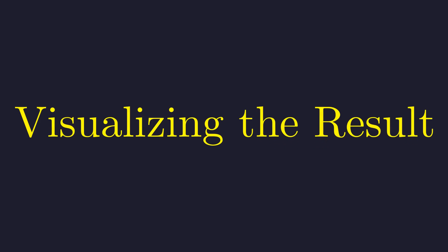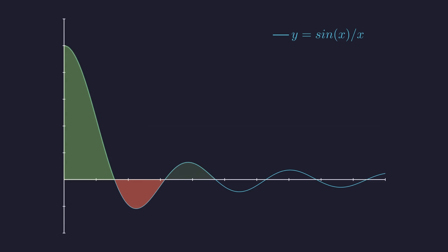Let's take a moment to visualize what this means. The function sine of x over x is also known as the sinc function. Here is a graph of the function. Notice how it starts at 1 and then oscillates with decreasing amplitude. The integral represents the net area under this curve. The positive lobes, shown in green, add to the area, while the negative lobes, shown in red, subtract from it. Even though the function goes on forever, these contributions converge to a finite value. And that final beautiful value for the net area is exactly pi over 2, a truly remarkable result from a seemingly impossible integral.